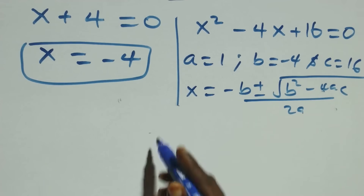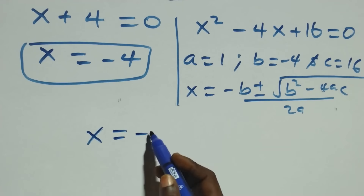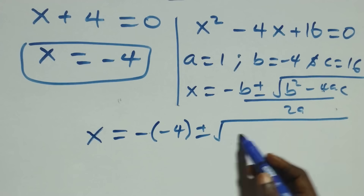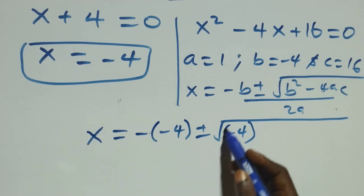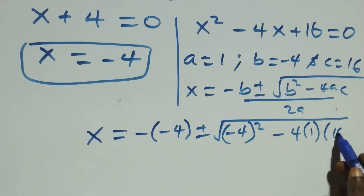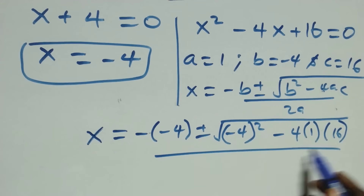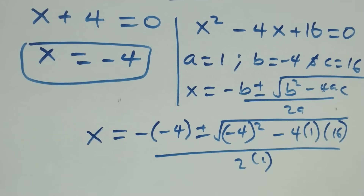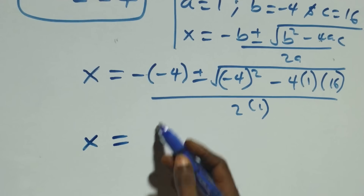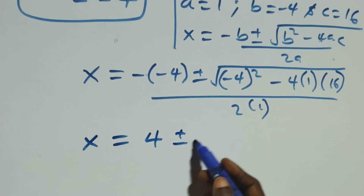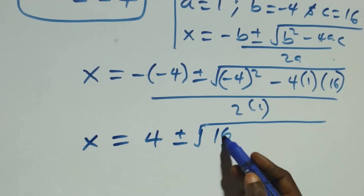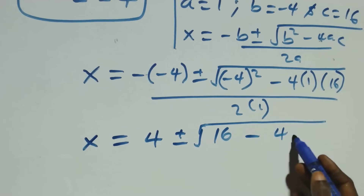Substituting, we have x equals minus(minus 4) plus or minus square root of (minus 4) squared minus 4 times 1 times 16, all over 2 times 1. That gives x equals positive 4 plus or minus square root of 16 minus 4 times 16, all over 2.